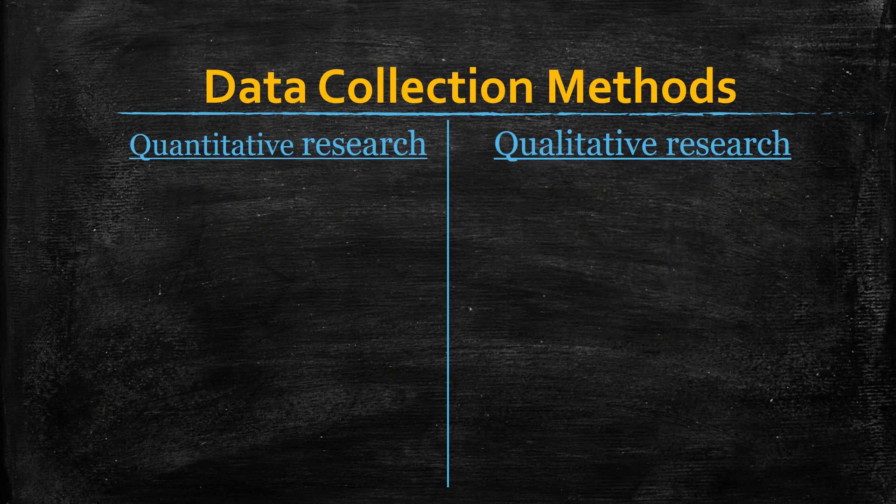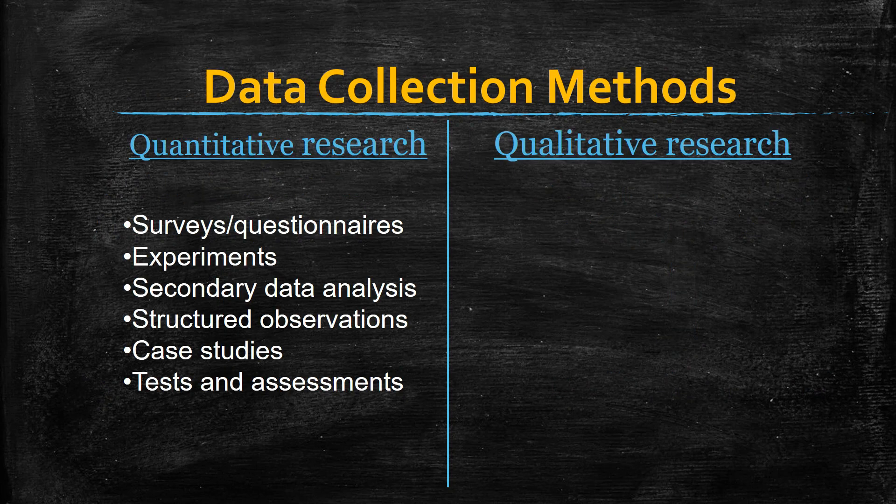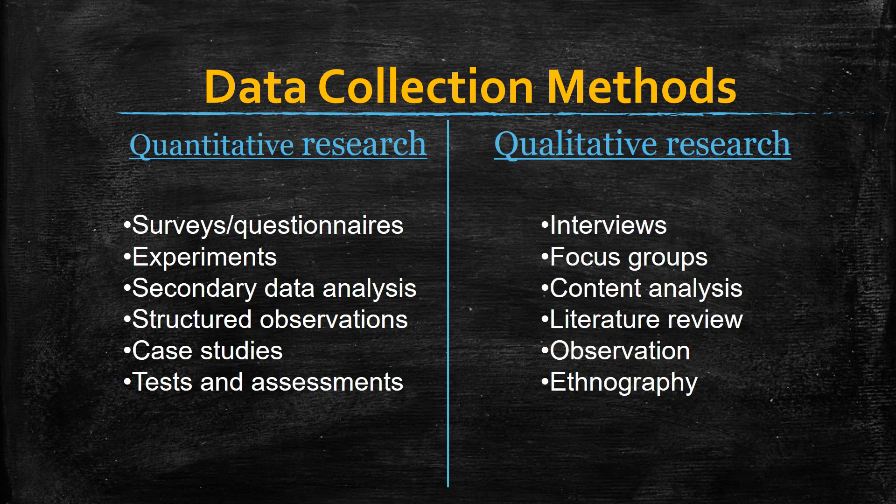Popular data collection methods in quantitative research are surveys, questionnaires, experiments, secondary data analysis, structured observations, case studies, tests, and assessments. While in qualitative research, popular data collection methods are interviews, focus groups, content analysis, literature review, observation, ethnography, etc.